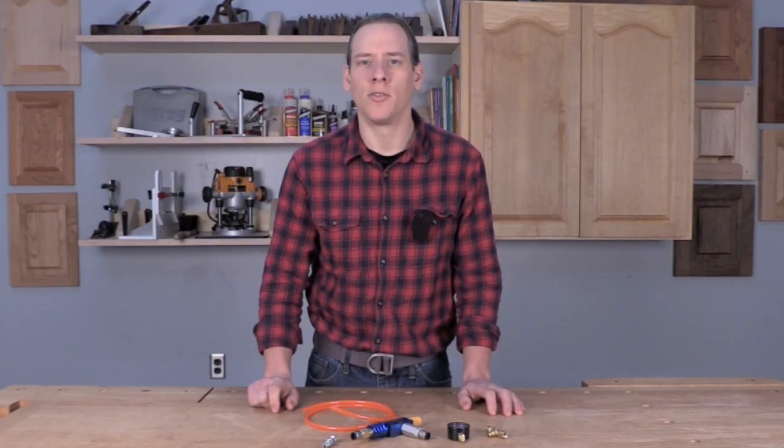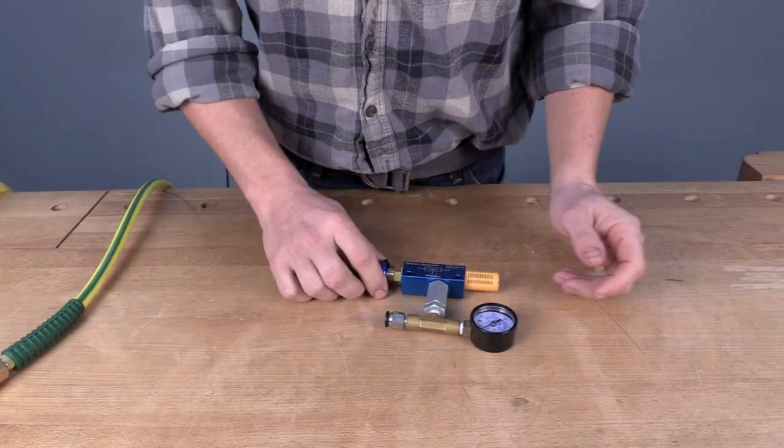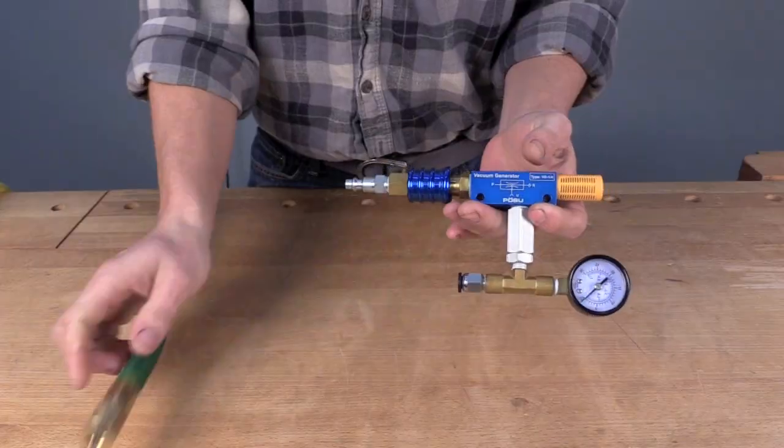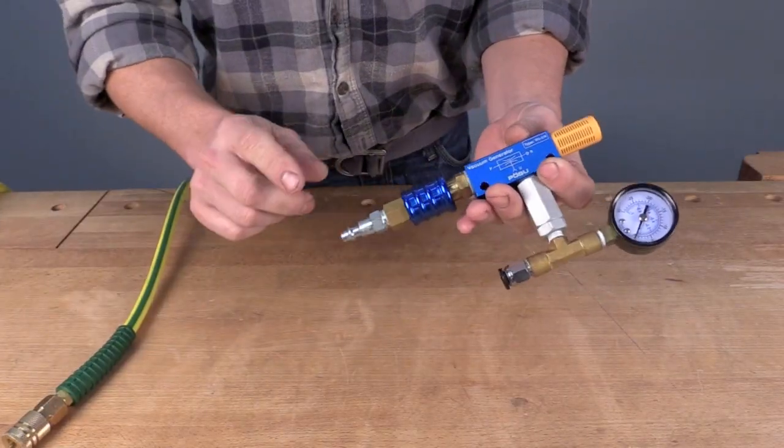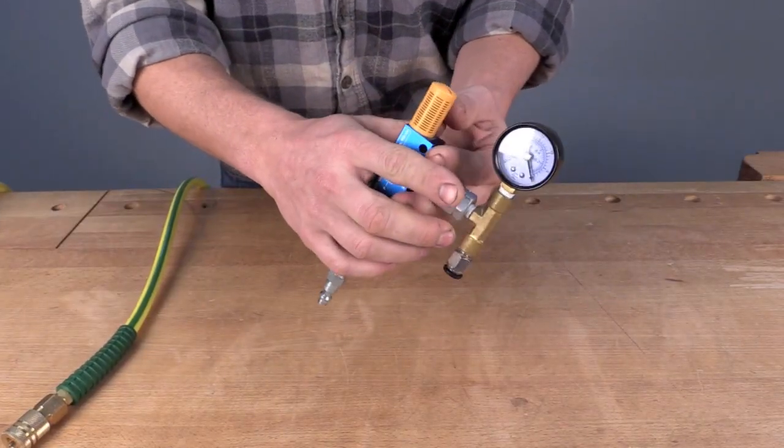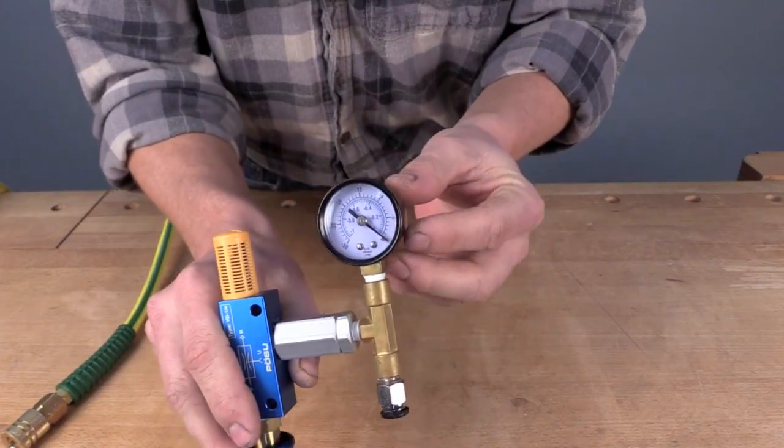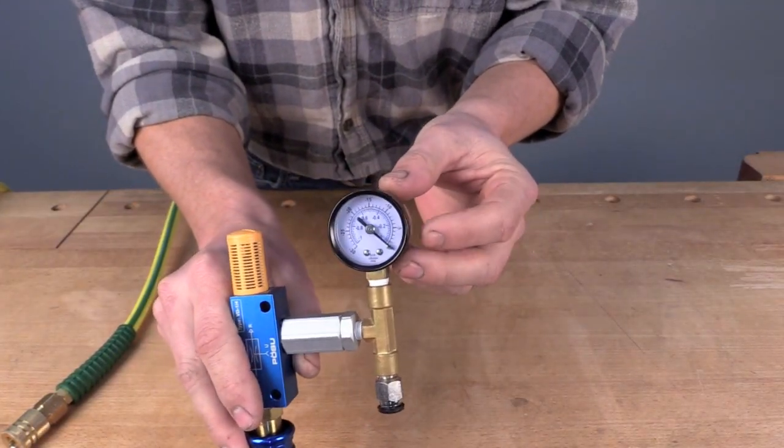Let's go ahead and take a closer look. I've got my Venturi vacuum switch all set up here with my quick connect fitting to attach my air compressor hose to, as well as the vacuum gauge accessory kit. That's going to allow me to monitor how much vacuum I'm creating with the Venturi.